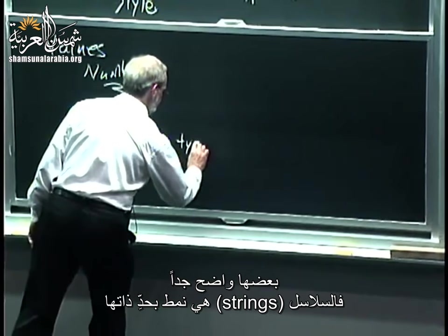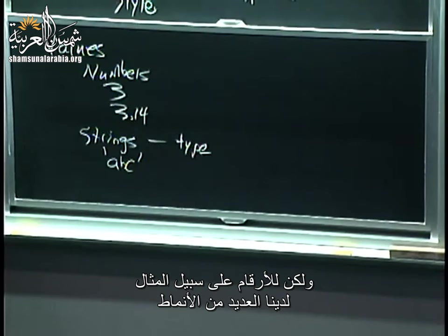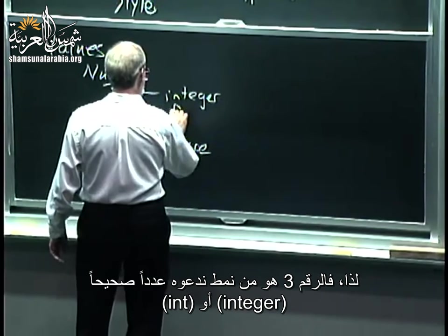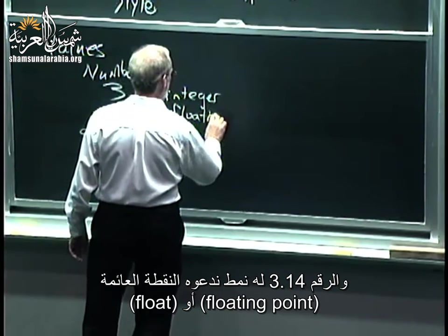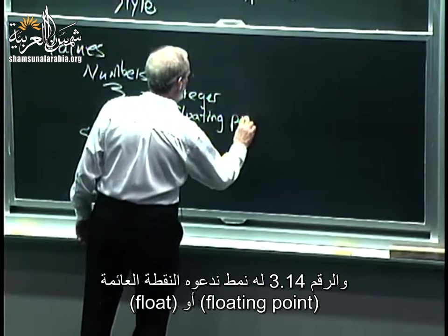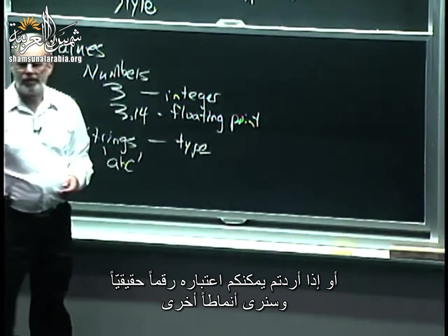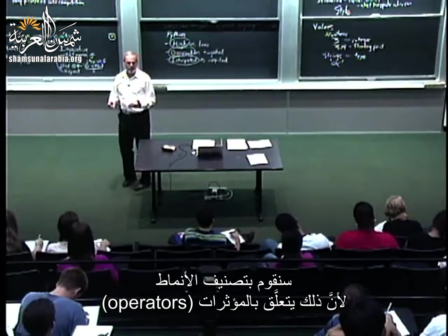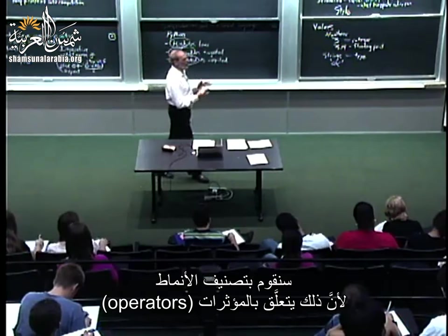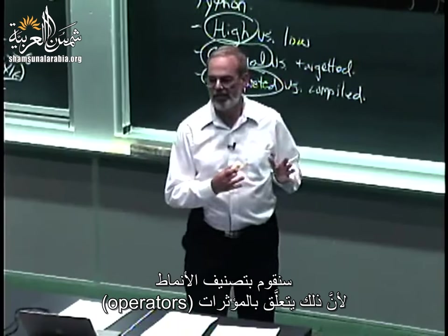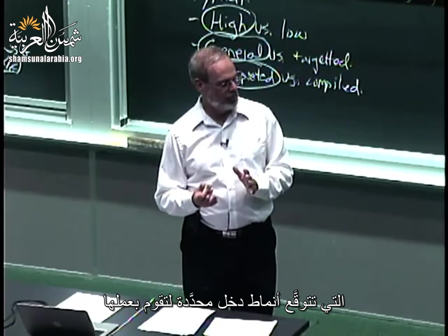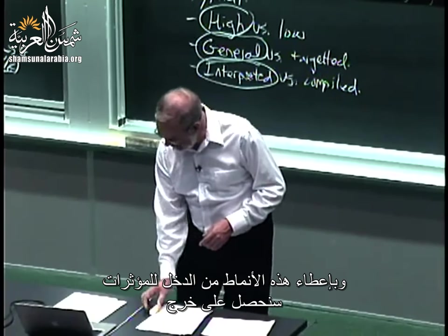Strings are captured in Python with an open quote, some sequence of characters, followed by a close quote. For numbers we have integers and floats among other types. Associated with each type is a set of operators that expect certain input types and produce output. Given those types of input, operators will give back output.